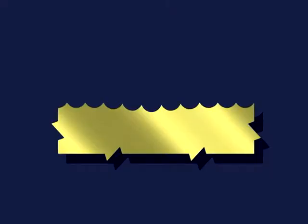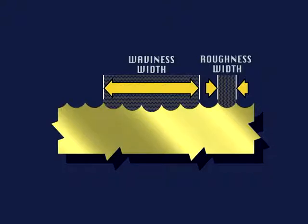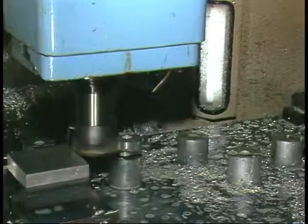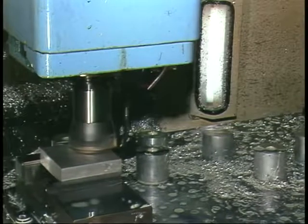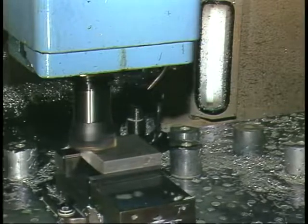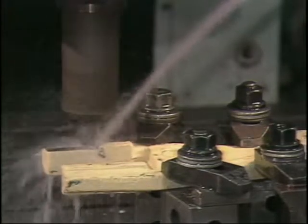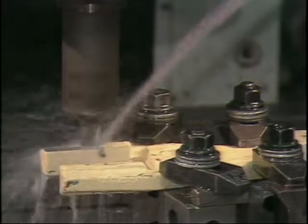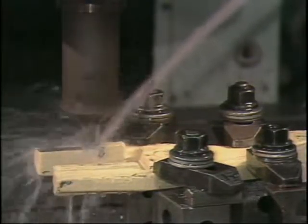Waviness is similar to roughness, but more widely spaced. One way to see the relationship between roughness and waviness is to look at the ocean. Think of the larger swells as waviness, and think of the smaller waves as roughness. Waviness, like roughness, results from the forces applied between the tool and workpiece during machining. When these forces interact, movement of the tool or workpiece can occur. The rigidity of the tool and spindle and the ability of the fixture to hold the workpiece help to reduce this movement to an acceptable level. The measurement of surface finish can determine if this acceptable level has been achieved.